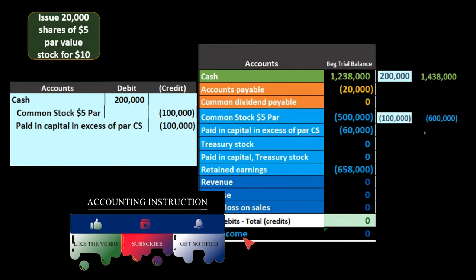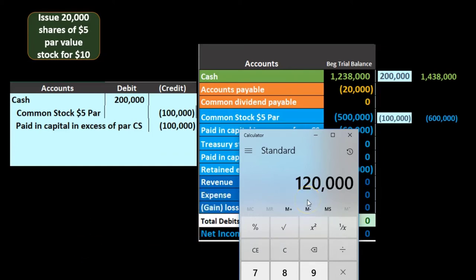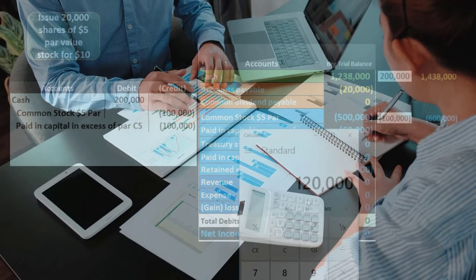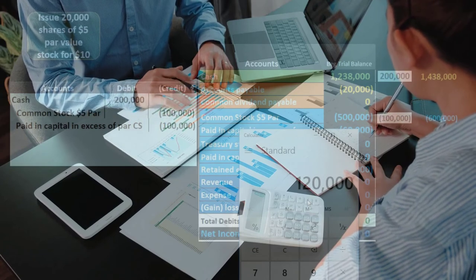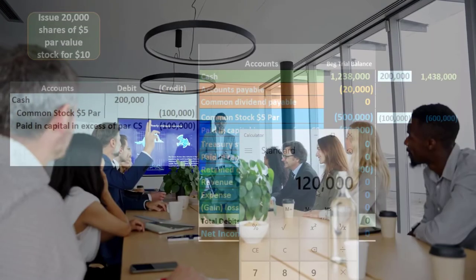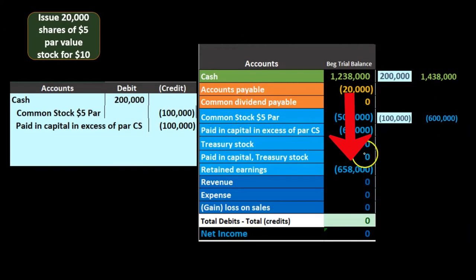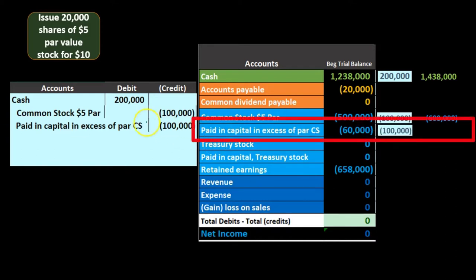The common stock balance goes to 600,000, and we can easily know how many shares are outstanding: 600,000 divided by the par value of five equals 120,000 shares outstanding. The financial statements don't show us who owns them — the notes could tell us that — but we know how many shares are out there. Each share is uniform in terms of voting rights and dividends. Then we increase paid-in capital by 100,000, bringing it from 60,000 up to 160,000.